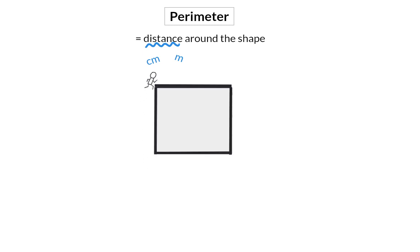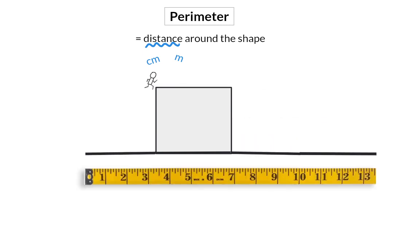Another way to look at perimeter is opening up the shape and putting all the side lengths next to each other, forming a long straight line, and then measuring the length of that line.